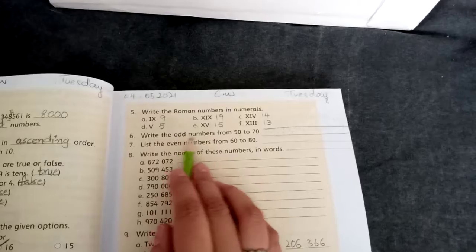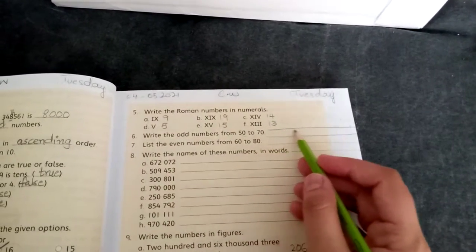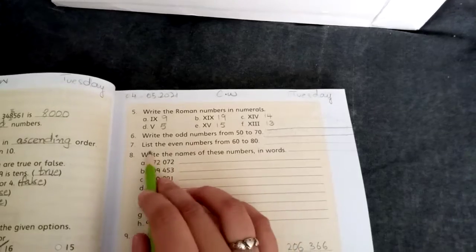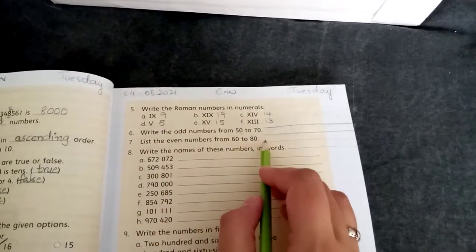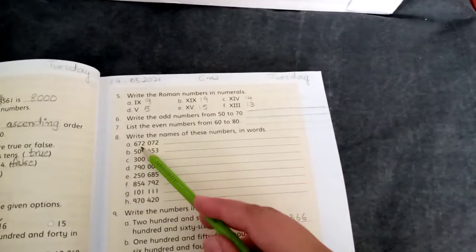Question number 6, write the odd numbers from 50 to 70. 50 to 70, you have to write odd numbers here. And question 7, write even numbers from 60 to 80, even numbers.